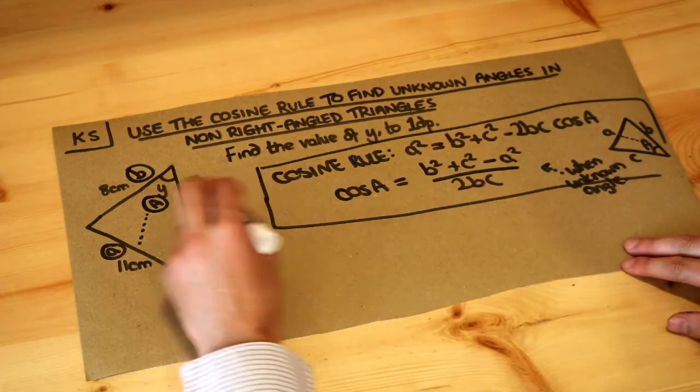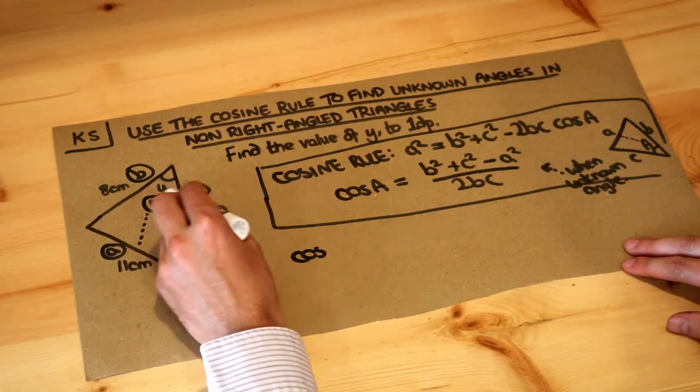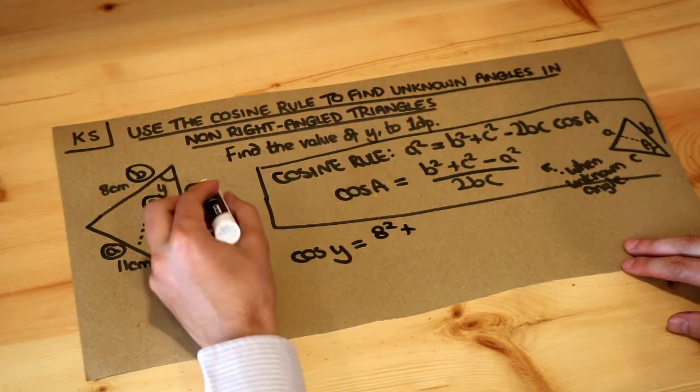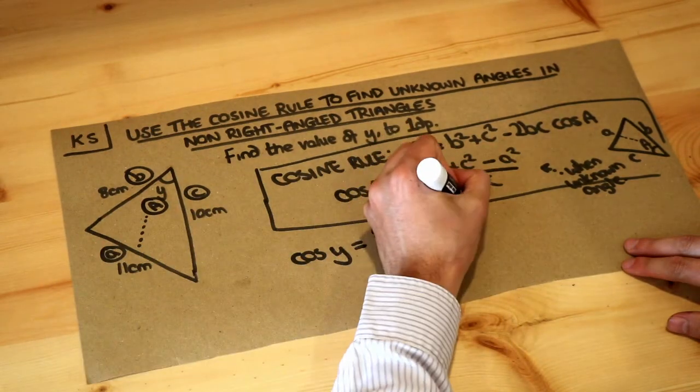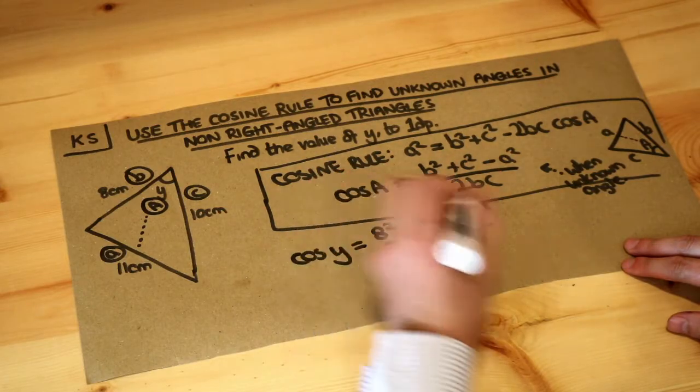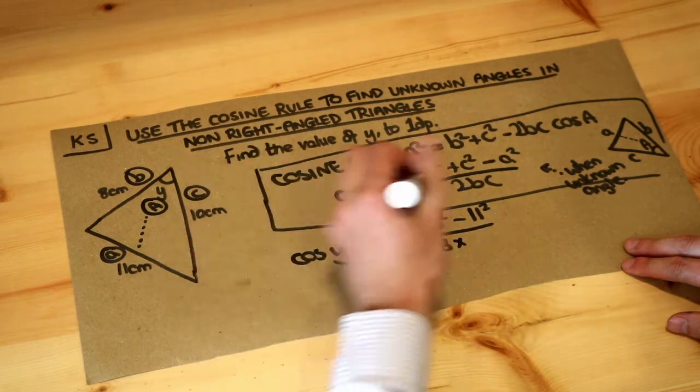So let's substitute these things into this formula. Cos of A which is cos of Y is equal to B squared, that's 8 squared, plus C squared, plus 10 squared, minus A squared, so minus 11 squared, all over 2BC, so that's 2 times B which is 8, times by C which is 10.